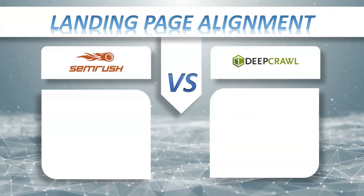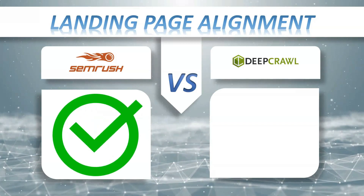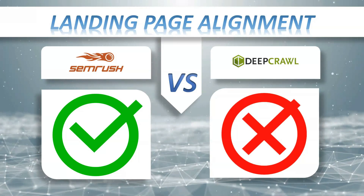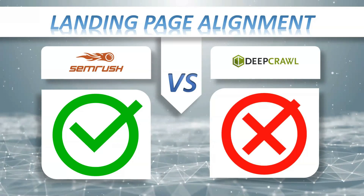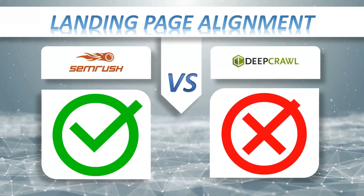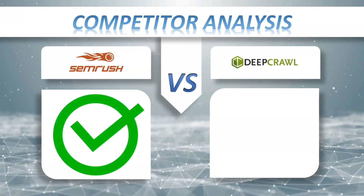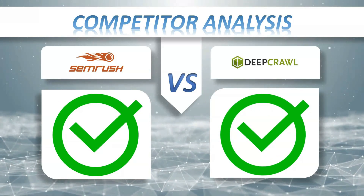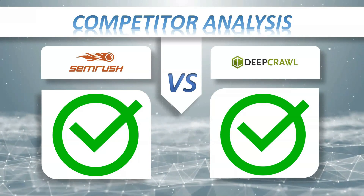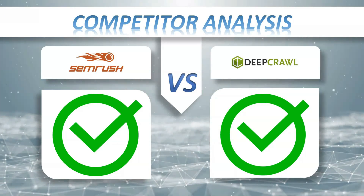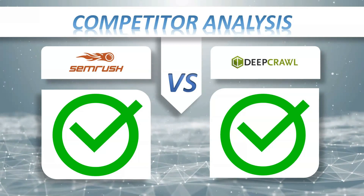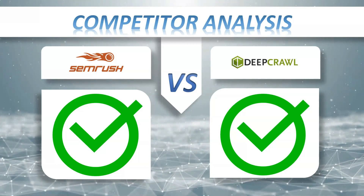Landing page alignment: SEMrush plus, DeepCrawl minus. When you're tracking your SEO or PPC efforts, you'll want to know what pages on your site are performing the best. Seeing your competitors' top performing landing pages can also help you understand what works well with your audience. Competitor analysis: SEMrush plus, DeepCrawl plus. Competitor analysis gives you the research to make data-driven marketing decisions based on your competitors' strategies, revealing their marketing from every angle — organic search, SEO, advertising, content, PR, and social media.